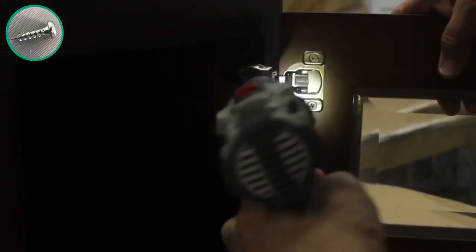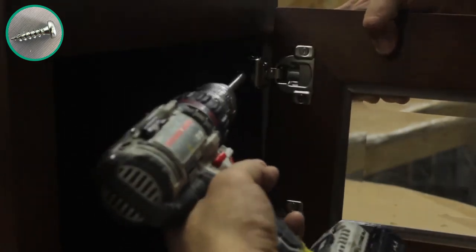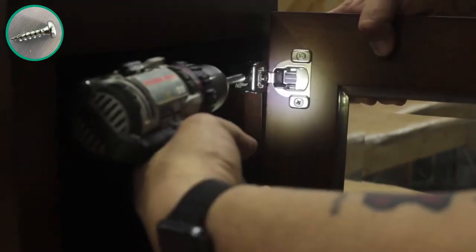Now place your door with attached hinges to the inside lip of the face frame and attach them to the cabinet using pre-existing dimples on the face frame.